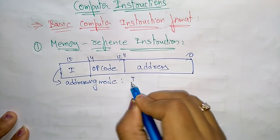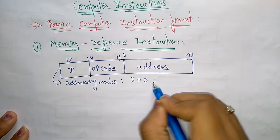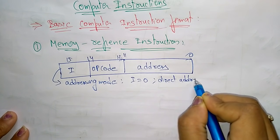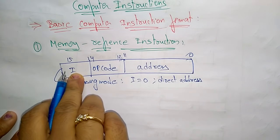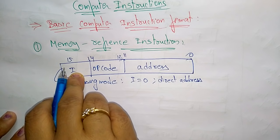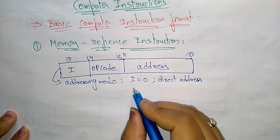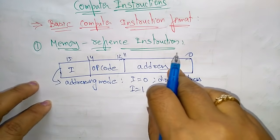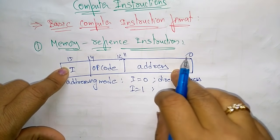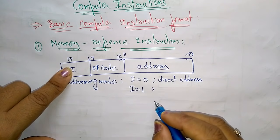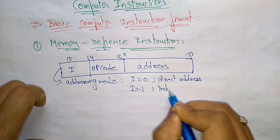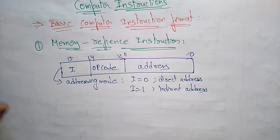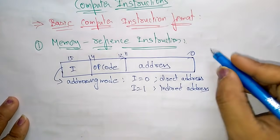Regarding addressing mode: if I is 0, it is a direct addressing mode, meaning the address stored directly indicates where to get the data. If I is 1, it indicates an indirect address.